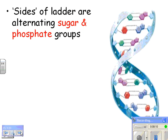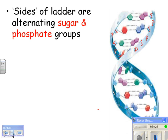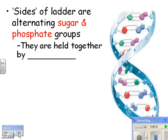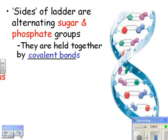The sides of the ladder are alternating sugar and phosphate groups — sugar, phosphate, sugar, phosphate all the way down both sides. This entire outer part is sugar-phosphate, and that's all covalently bonded and very strong. Those are all held together by strong covalent bonds. You want your DNA to be held together very tightly.